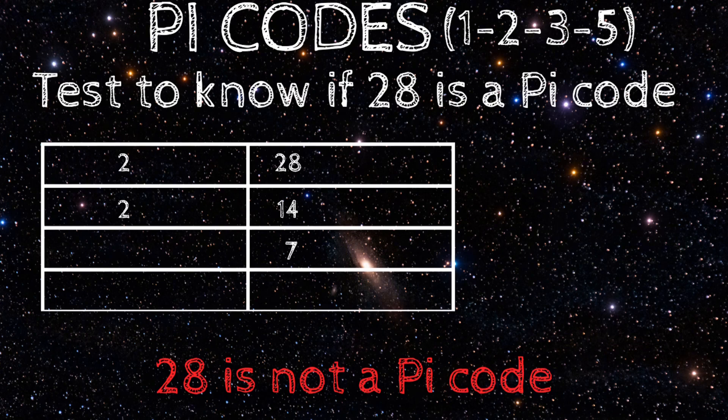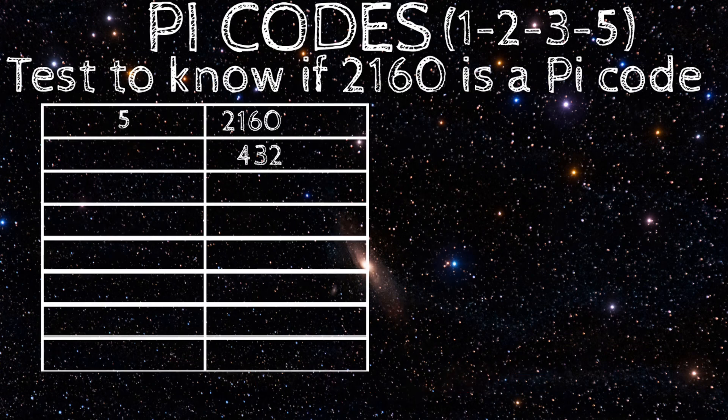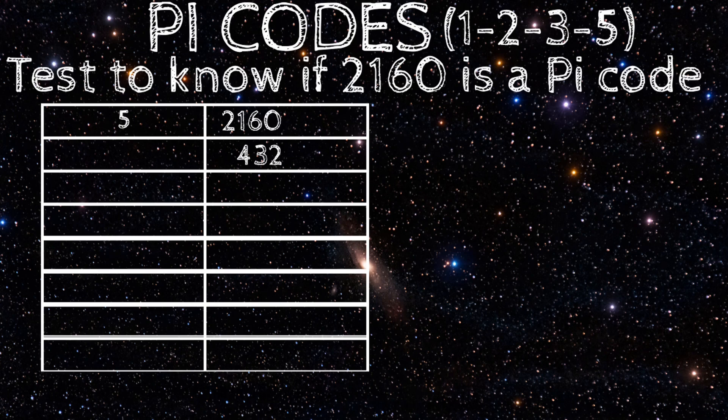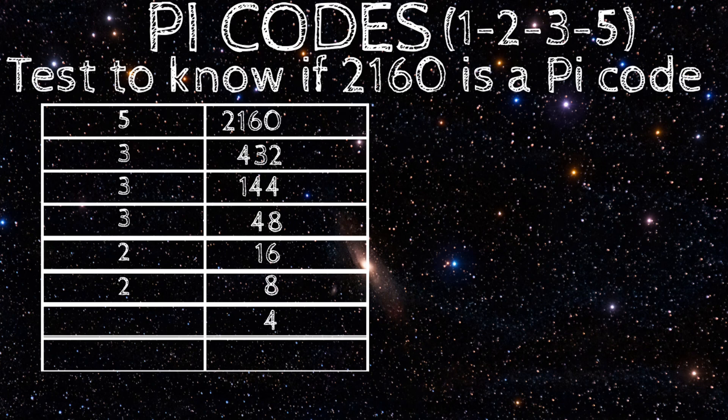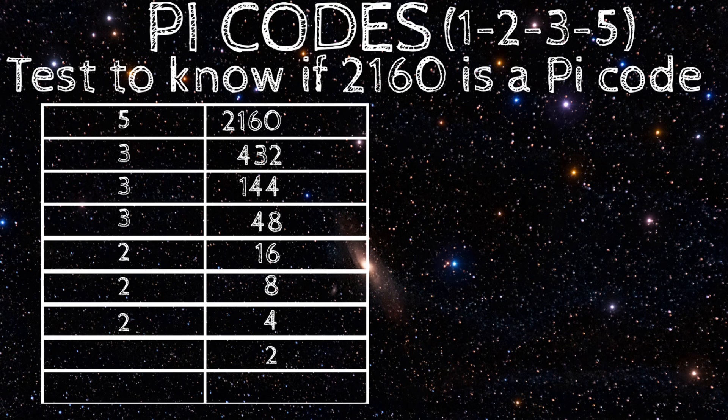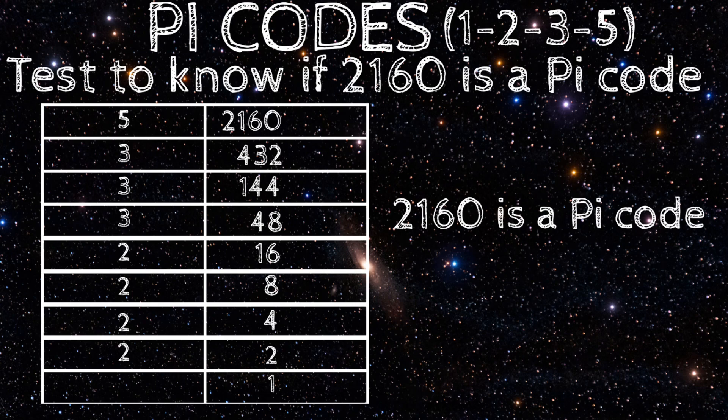That's how strong the zodiac bond is. Last one, let's try a bigger number. Say, 2160. Starting with 5. 5 divide 2160 gives 432. 5 can't divide further. Continue with either 2 or 3. I'm using 3. 3 divide 432 gives 144. 3 divide 144 gives 48. 3 divide 48 gives 16. 3 can't divide further, using 2. 2 divide 16 gives 8. 2 divide 8 gives 4. 2 divide 4 gives 2. And 2 divide 2 gives 1. The division ends in 1. Therefore, 2160 is a pi code.